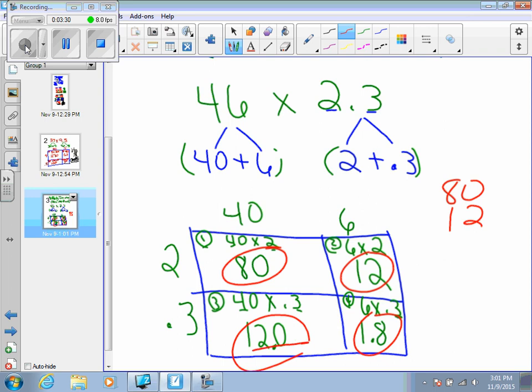This right here is 12.0. It is not 120, so it should be lined up appropriately. If you want to put your decimals at the end of your whole numbers, that may help you. And our last box was 1.8. Do not put the 1 underneath the 1 and the 8 underneath the 2. Your ones places have to be lined up, and your tenths places have to be lined up.